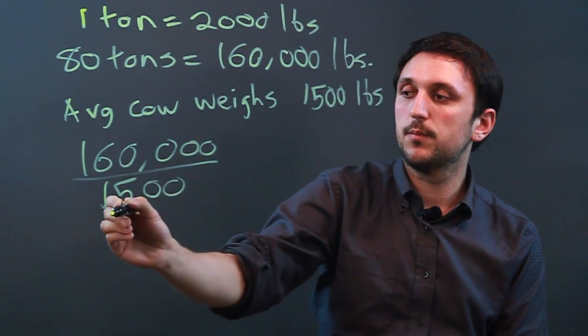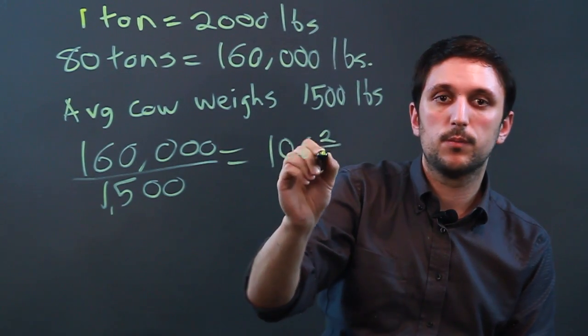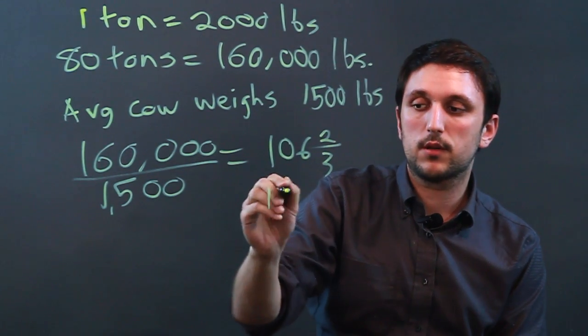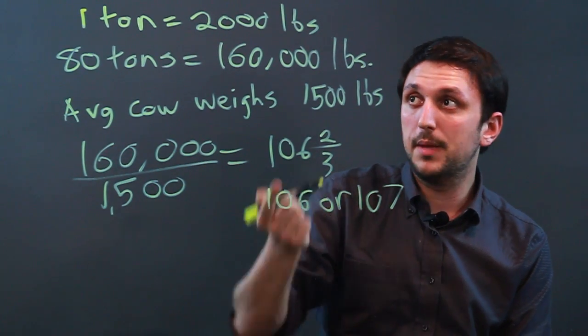which gives us 106 and 2 thirds. So roughly 106 or 107 cows make up 80 tons.